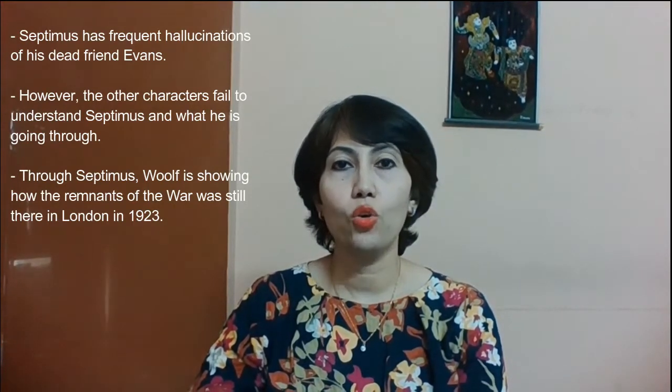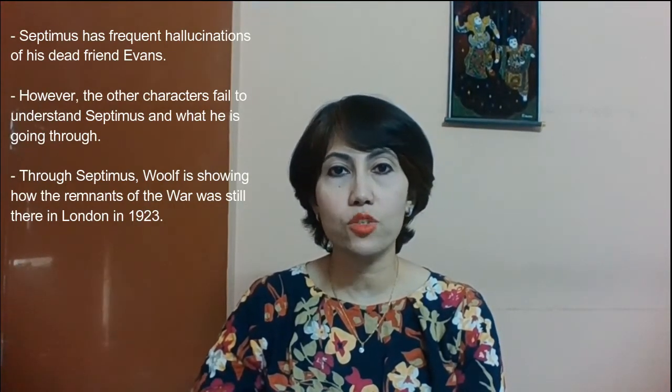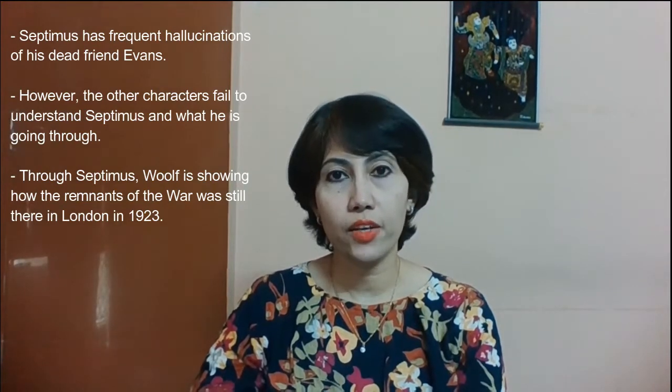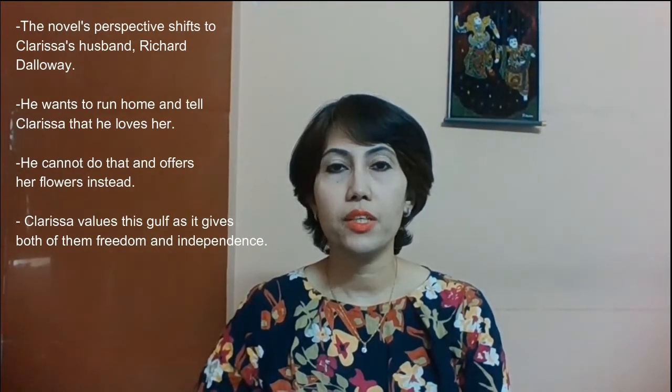Through Septimus, Woolf is showing how the remnants of the war were still present in London in 1923. The novel's perspective then shifts to Richard Dalloway, Clarissa's husband. He wants to run home and tell Clarissa that he loves her, but he is unable to do so and gives her flowers instead. Clarissa values the distance that exists between people — even between her and her husband — as it gives both of them freedom and independence.